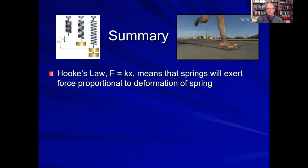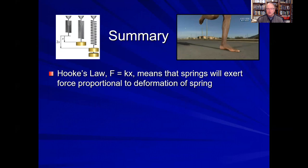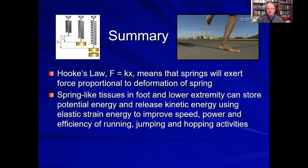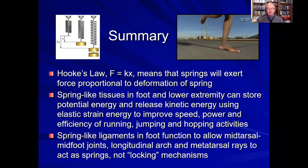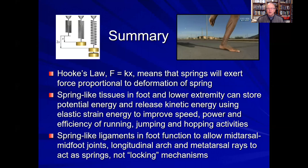In summary, the foot and lower extremity has multiple springs within it. Hooke's law F equals KX means that springs — whether steel springs or the springs within our foot and lower extremity — will exert a force proportional to the deformation of that spring. The spring-like tissues within the lower extremity are able to both store and release energy using elastic strain energy in order to improve the mechanical efficiency of running, jumping, and hopping activities. These spring-like ligaments within the foot and lower extremity, in addition to the long tendons coming from the leg, allow our foot to adapt to terrain, do side-to-side activities, and keep our forefoot plantigrade on the ground. They are not locking mechanisms as we've been taught for many years in the podiatry profession, but rather spring-like mechanisms important to allow our foot to function optimally in all weight-bearing activities. Thank you for your attention to the lecture and stay safe.